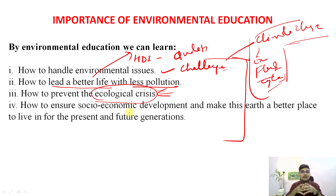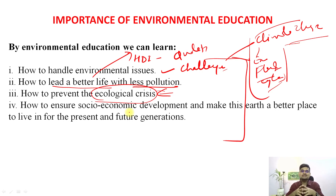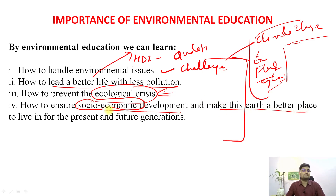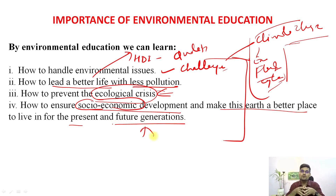Environmental education also helps prevent ecological crisis. We are already in the age of the sixth mass extinction, with species becoming extinct or falling into endangered categories. Gene pools need to be secured. It also ensures socio-economic development to make Earth a better place — not just for flora and fauna, but also for social and economic sectors — making it livable for present and future generations, which is the main goal of sustainable development.